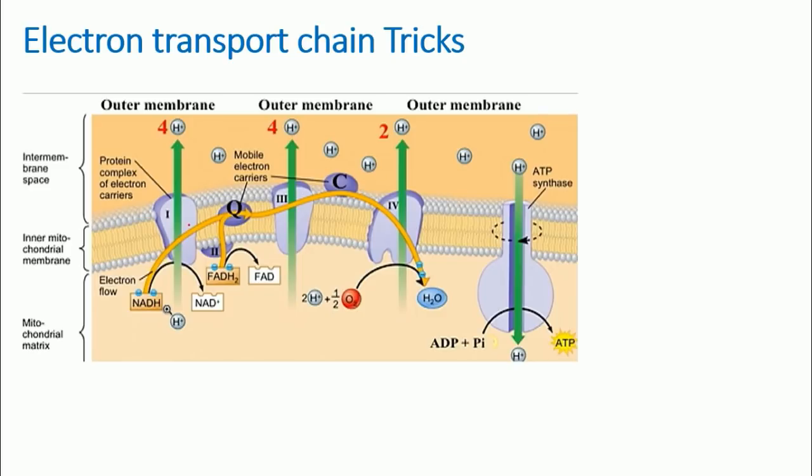There are three things that you need to remember. The first thing is all those important components of electron transport chain: complex one, complex three, complex four, and finally complex five or ATP synthase. There is also complex two in the middle, which is actually an enzyme of TCA cycle.